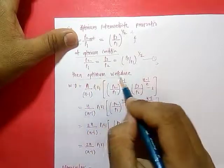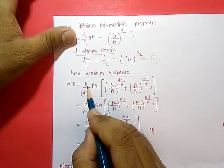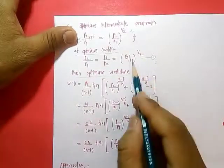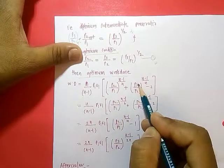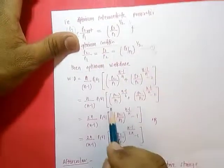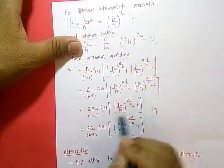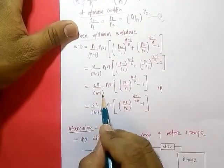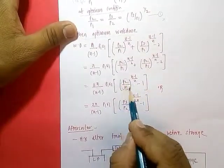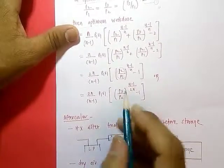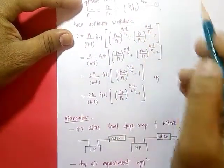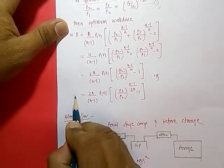Putting the optimum pressure ratio value back into the work done equation, we get the optimum work done. The equation is [n/(n-1)] · p1·v1 · [(p2/p1)^((n-1)/n) + (p3/p2)^((n-1)/n) − 2]. Since both pressure ratios are equal, p3/p2 = p2/p1. Taking 2 common from both terms gives: W_opt = 2·[n/(n-1)] · p1·v1 · [(p2/p1)^((n-1)/n) − 1], or in terms of total pressure ratio, replacing p2/p1 with (p3/p1)^(1/2).